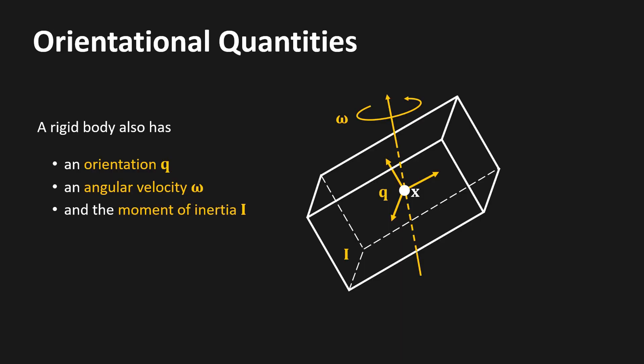Now let us extend the method from particles to rigid bodies. In addition to position, linear velocity, and mass, a rigid body possesses corresponding angular quantities: an orientation q, an angular velocity omega, and the moment of inertia i. The orientation q is typically represented by a quaternion. The angular velocity is a 3D vector, and the moment of inertia is also a 3D vector in the rest pose of the rigid body, which can be pre-computed from the shape of the body.